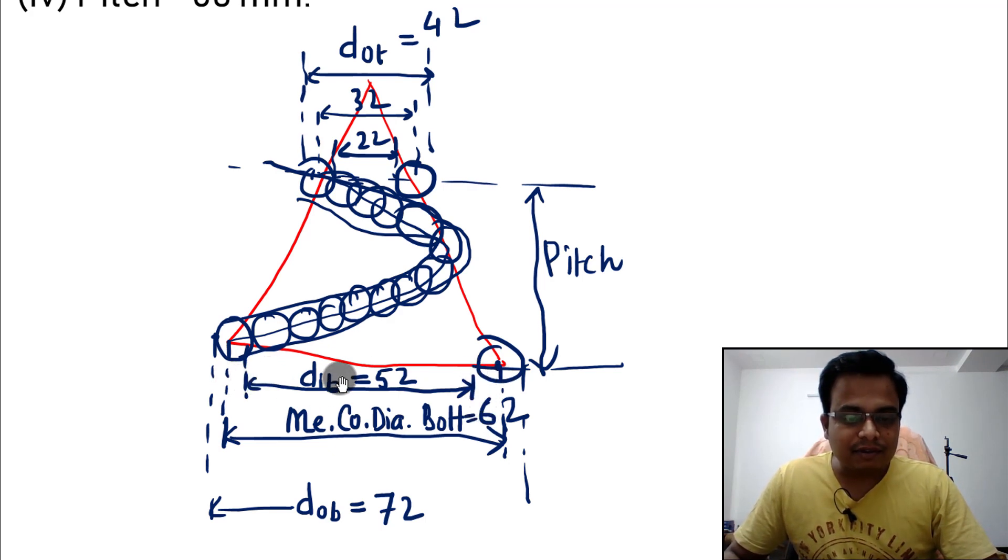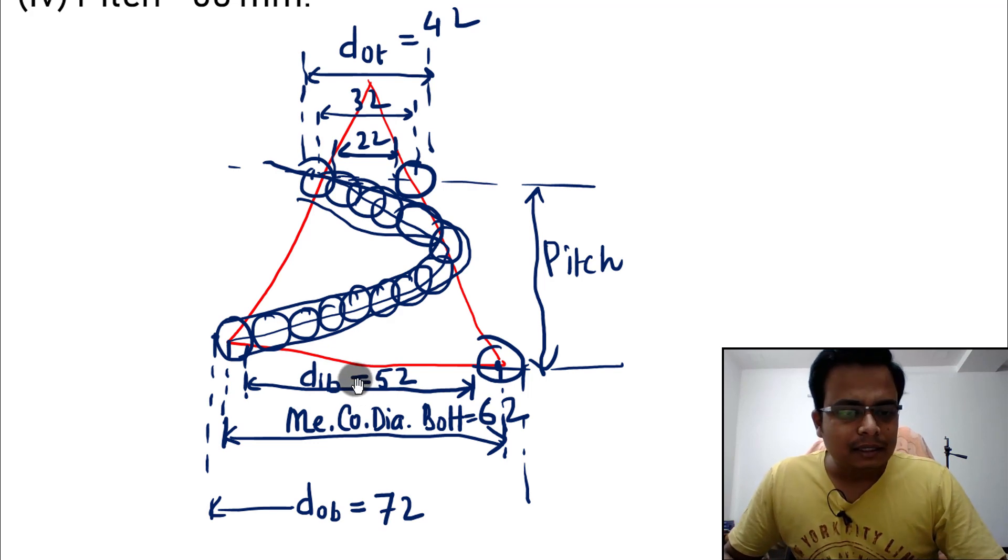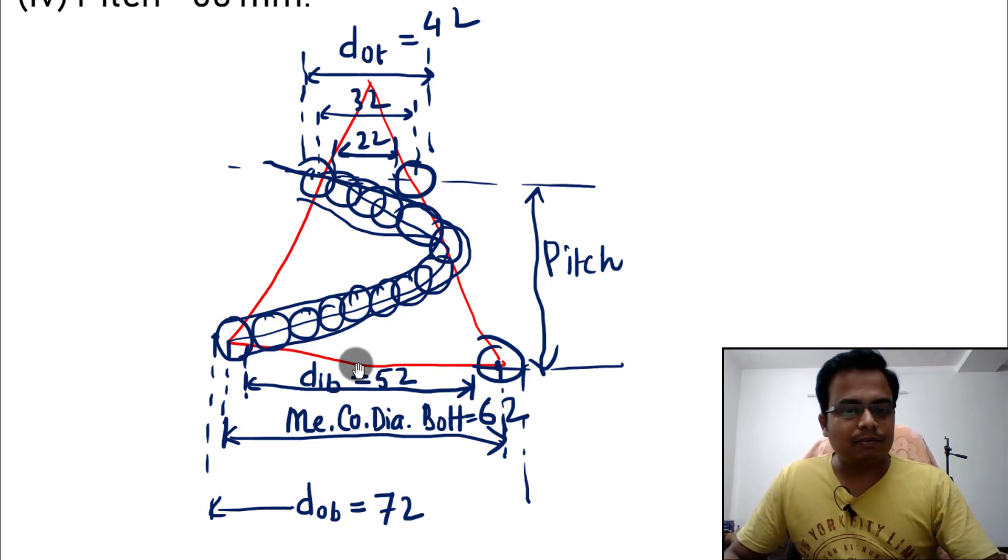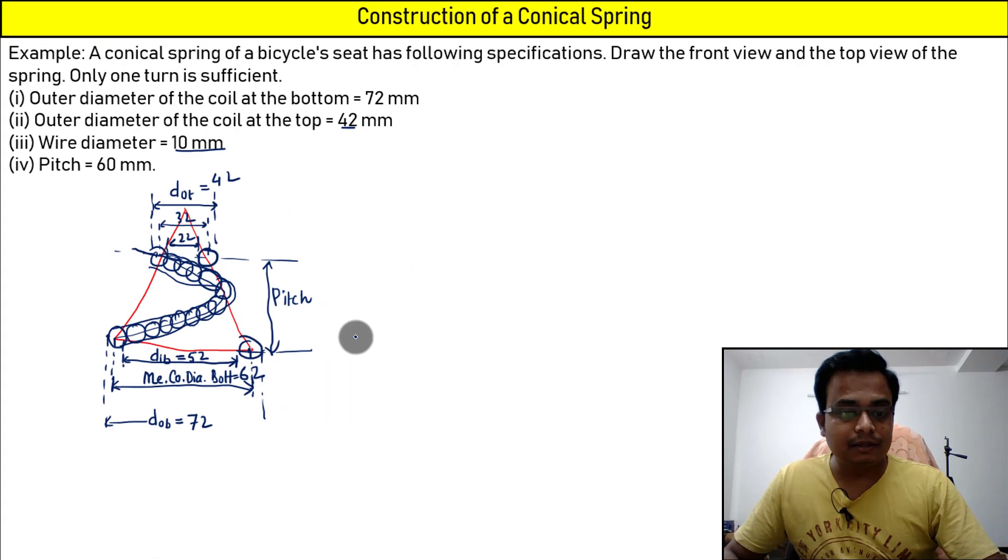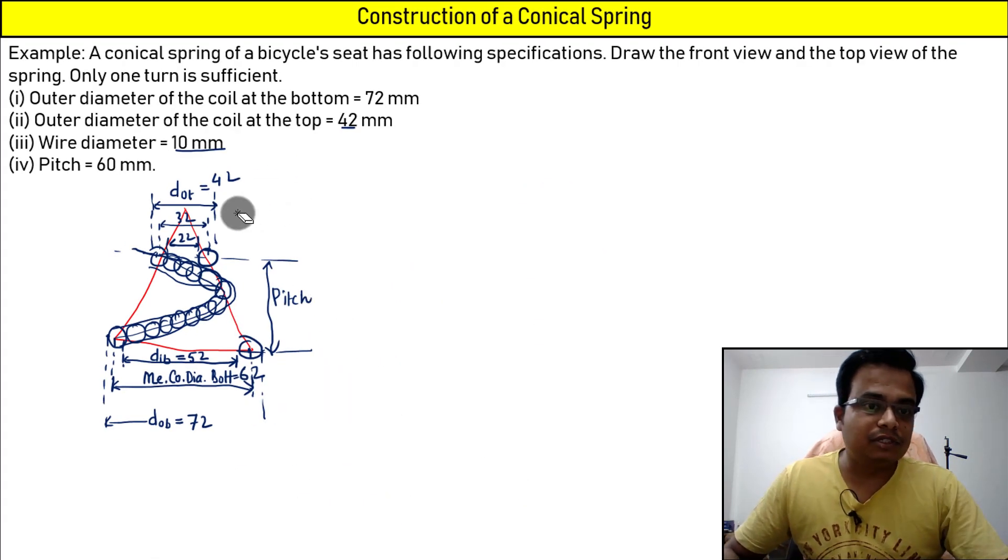And when you subtract 5 and 5 right from the center, 62 minus 5 minus 5, you get the inner diameter at the bottom. This is how you need to deal with it. Now let's rub all of this and let's get down to business.